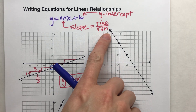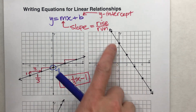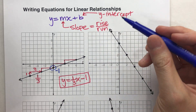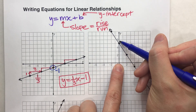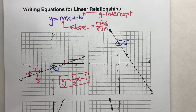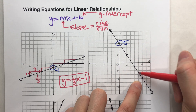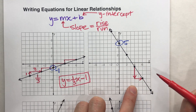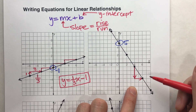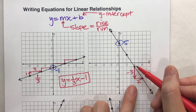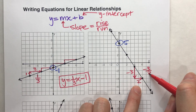Let's do another example. Notice this line is going down and to the right — that's an important thing to notice. Let's start by finding the y-intercept. Here's my y-axis. My line crosses the y-axis right between 4 and 6, so this is 5. For my slope, I'll pick two points, and moving from left to right, notice I have to go down and to the right to go from one point to the other.